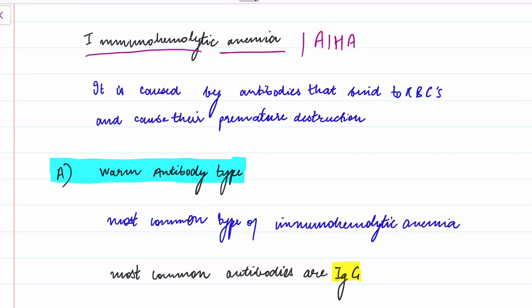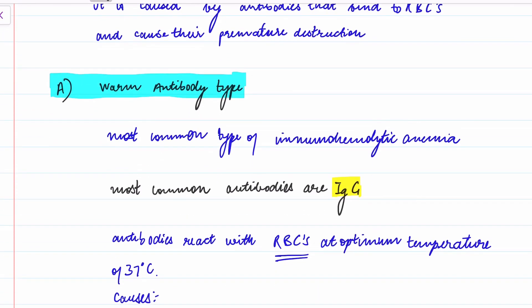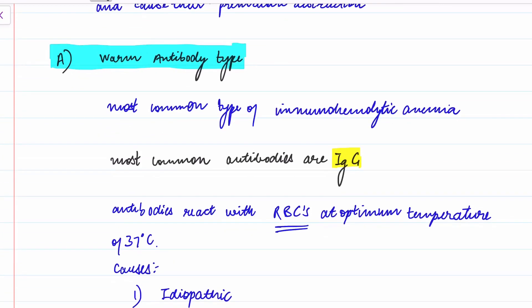It can also occur due to drug reactions. That is why we prefer the term immunohemolytic anemia. As the name suggests, it is caused by antibodies that bind to RBCs and cause their premature destruction. It is of two types: warm antibody type and cold antibody type.